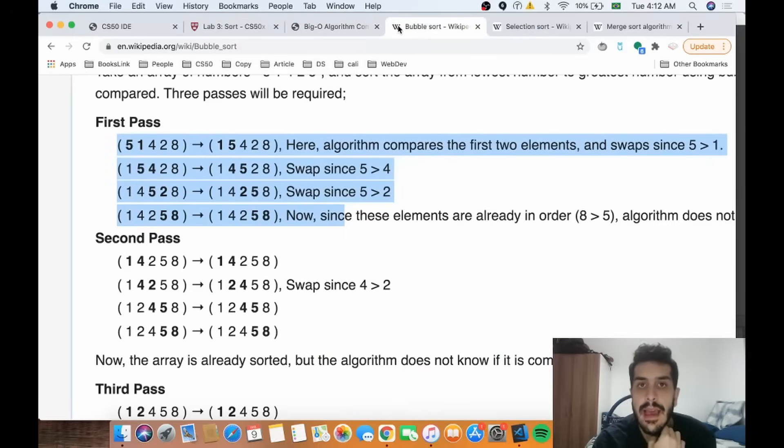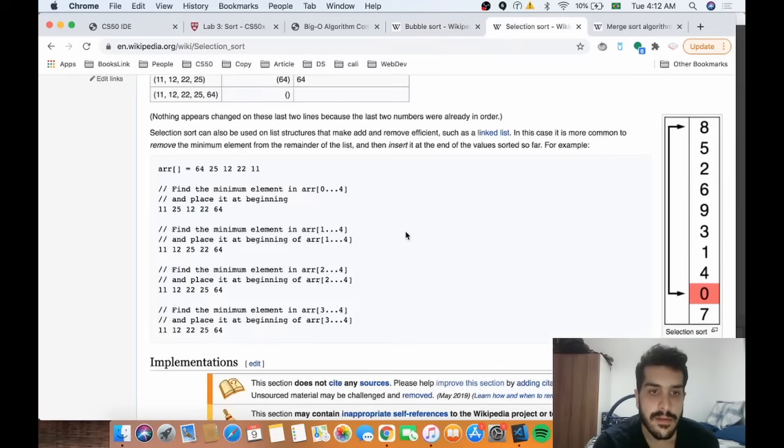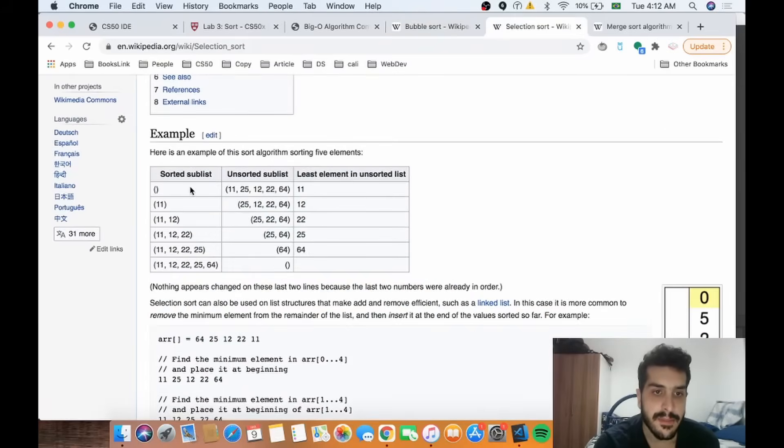So there is a very good scenario where all the elements are already sorted where it's not that inefficient. Now selection sort finds the smallest - so this is my unsorted array. We look for the smallest value and then place it into a sorted sub-list.